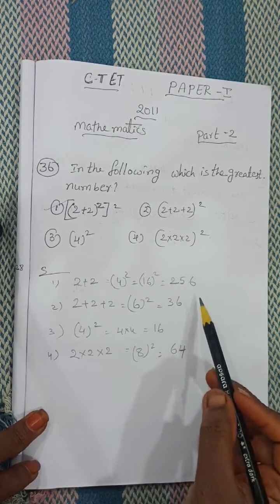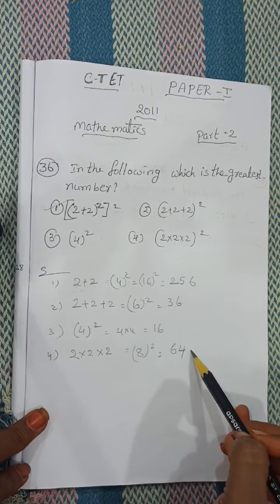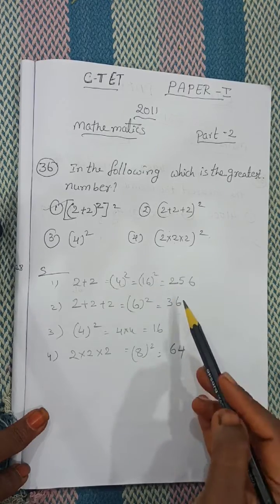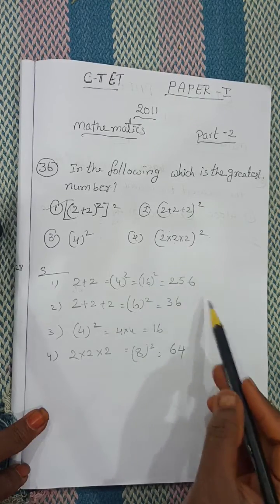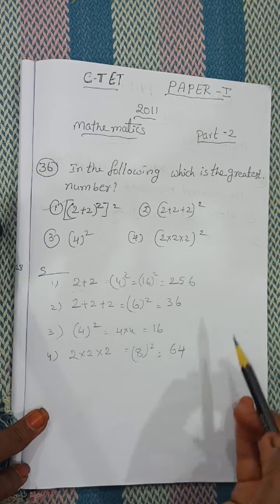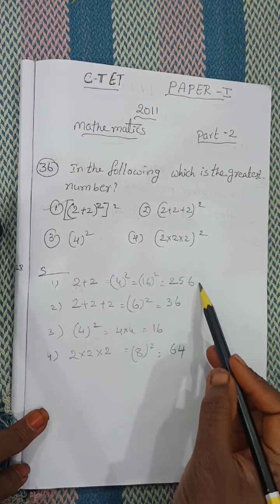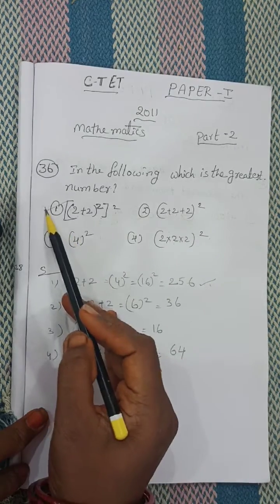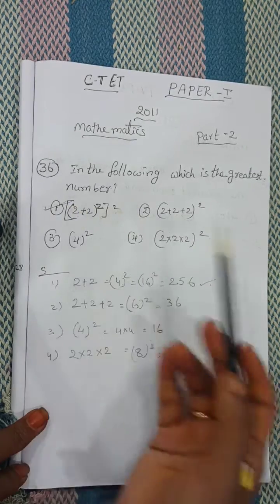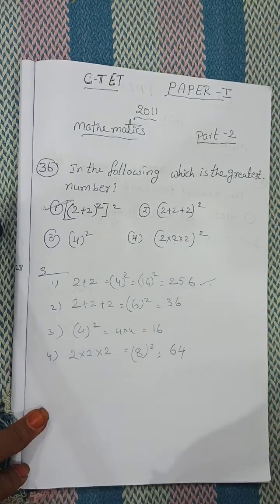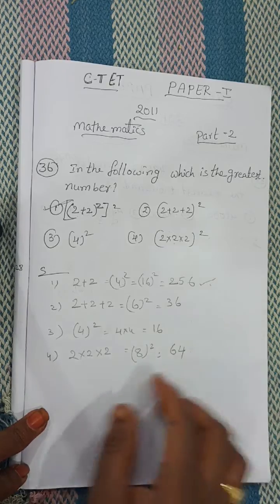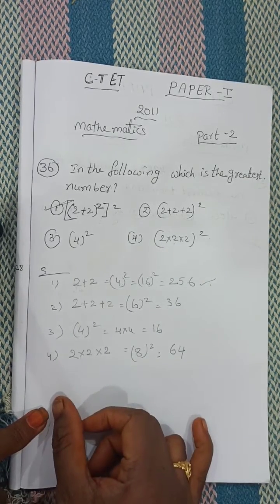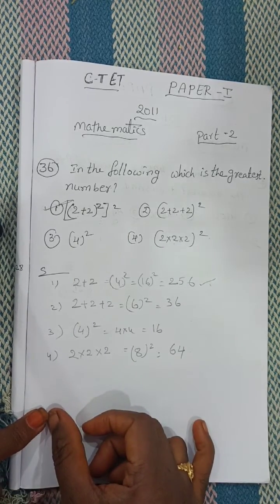Now we can identify very easily after multiplication which is the greatest number. 256 — the answer is the first one. Understood? This is today's topic.